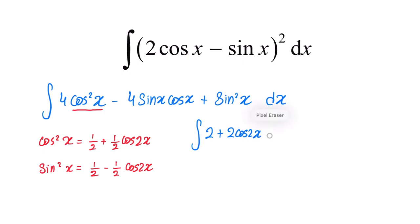4 sine x cosine x we can write it as 2 sine 2x. Remember that sine 2x its expansion is 2 sine x cosine x, so we went backwards. 4 sine x cosine x is 2 sine 2x.